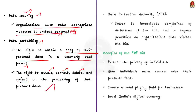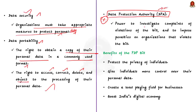The PDP Bill also establishes the Data Protection Authority, which oversees the implementation of the bill. The Data Protection Authority will have the power to investigate complaints of violation of the bill and impose penalties on organizations that violate it. These are the important highlights of the bill.